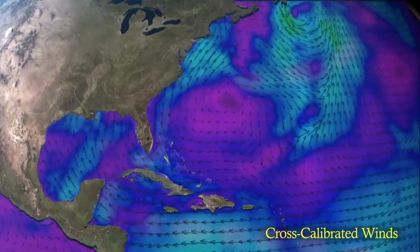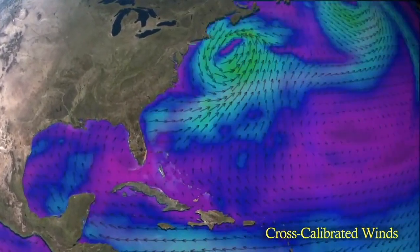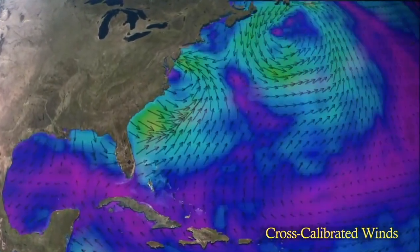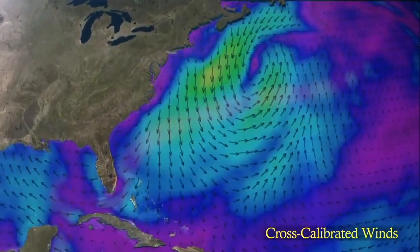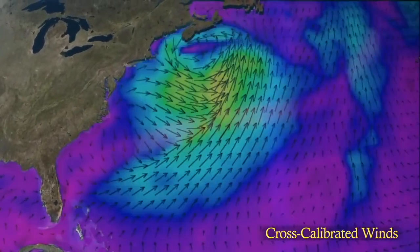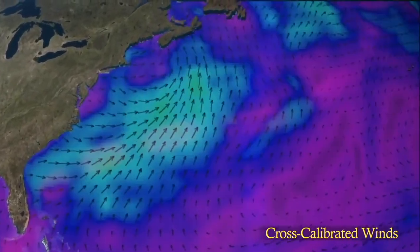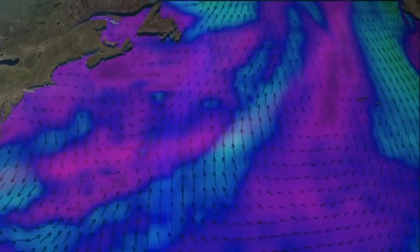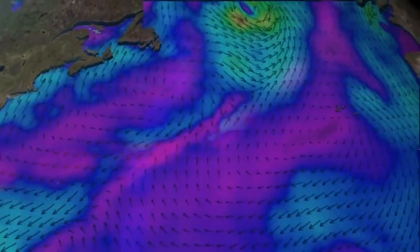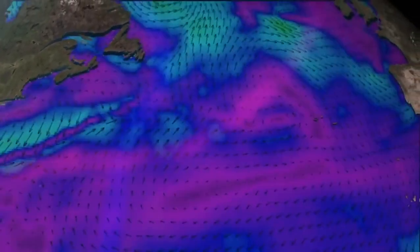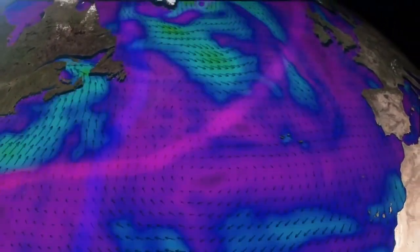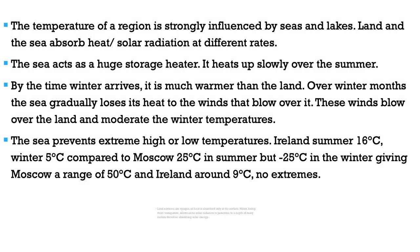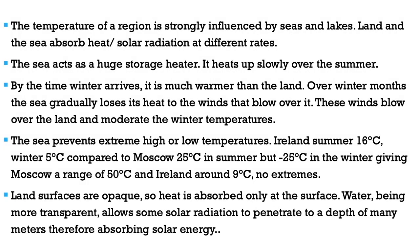This difference occurs because land surfaces are opaque, so heat is absorbed only at the surface. Water, being more transparent, allows some solar radiation to penetrate to a depth of many metres, absorbing solar energy throughout that depth.